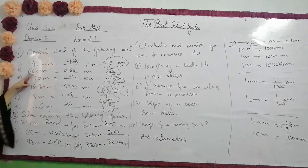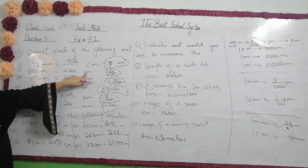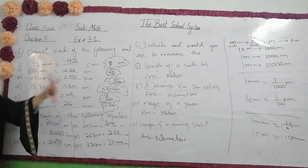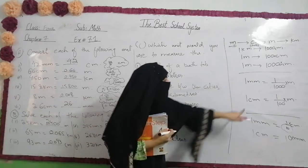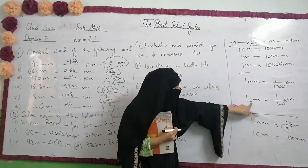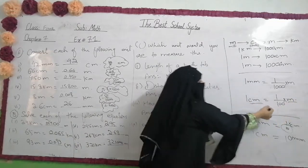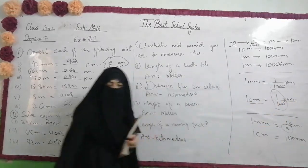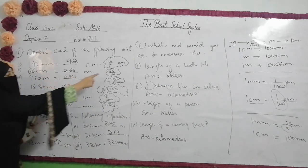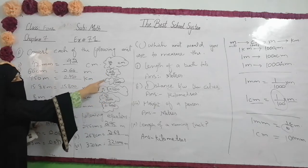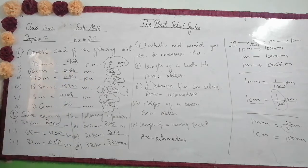Question number 2 is 66 cm and now you have to convert it to meters. To convert to meters, you divide the value. So 66 divided by 100, the answer is 0.66.